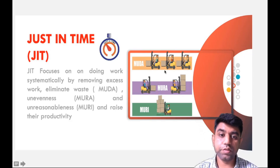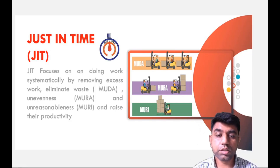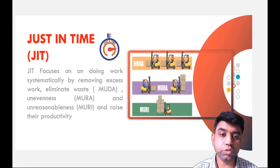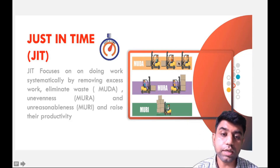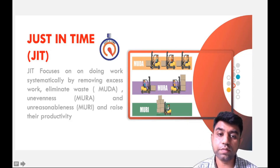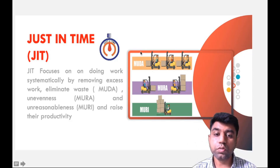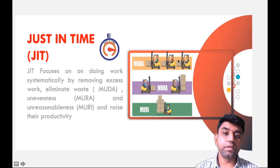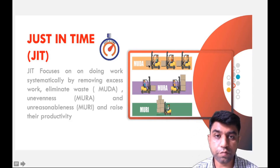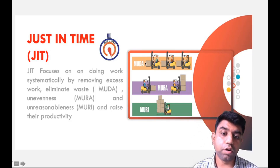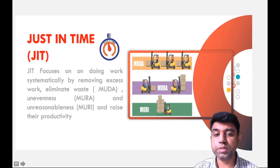Let us understand that concept with the help of a short example. Suppose there is one company in which we are lifting different boxes. What does Muda suggest? It is clearly visible from the diagram that one forklift can lift three boxes. Unnecessarily we are wasting resources — this should not be there. If one forklift is enough to lift three boxes, only one forklift should be used.